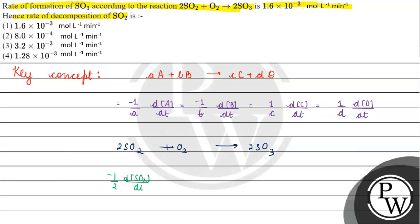Applying this to our reaction: the rate equals minus 1/1 × d[SO₂]/dt = 1/2 × d[SO₃]/dt, where 2 is the stoichiometric coefficient. So the rate is linked to the change in concentration of SO₃ with respect to time.